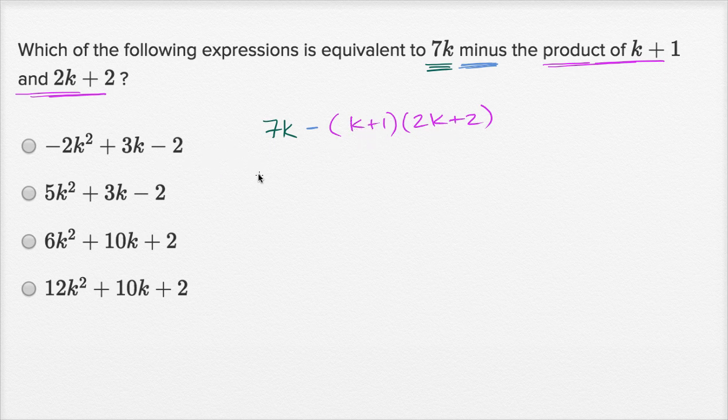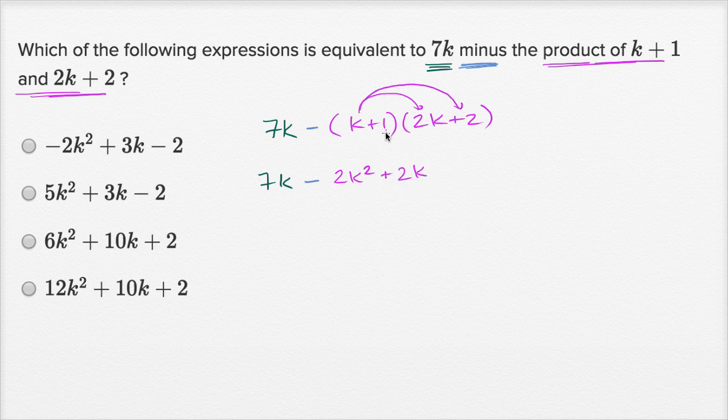So this is going to be 7k minus, and then let's just multiply this out. You're going to have k times 2k, which is 2k squared, k times two, which is plus 2k, then one times 2k, which gives us another 2k, and then one times two, which gives us plus two.